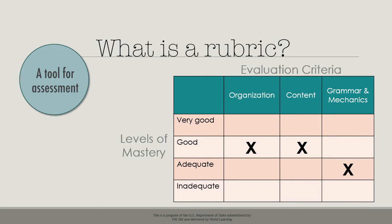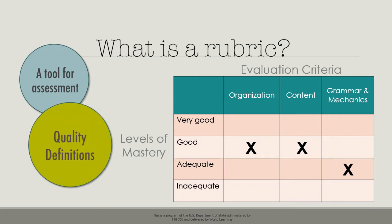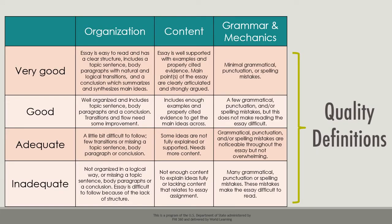How does the teacher decide which level to choose? Quality definitions for each level of each skill are included in the rubric. The teacher chooses the level whose description best describes the student's work in that area. In this case, the teacher decides that the descriptions for the level good fit the student's work in terms of organization and content. For grammar and mechanics, the definition for adequate is the best description of the quality of the student's work.